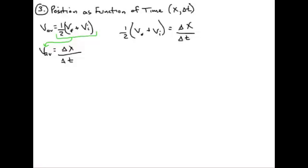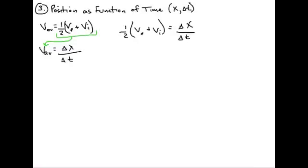We can expand this a little bit further. One half times vf plus vi equals x final minus x initial. That means our final displacement point minus our initial displacement point over delta t.